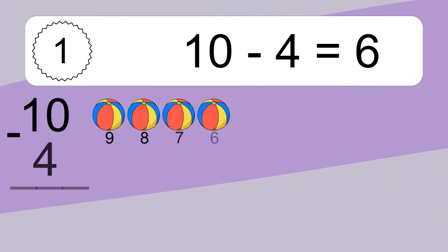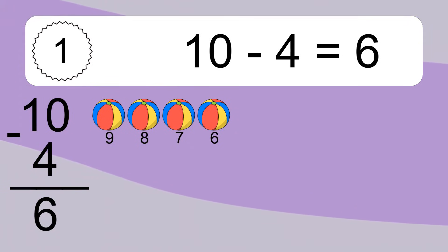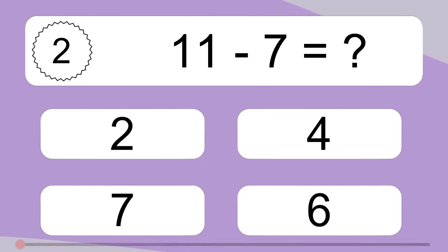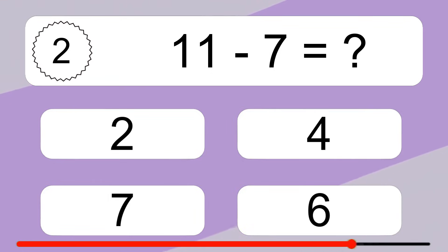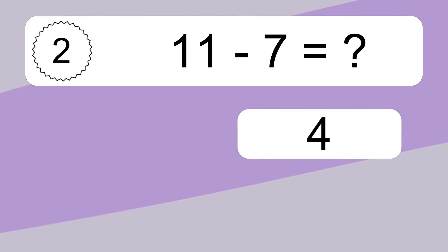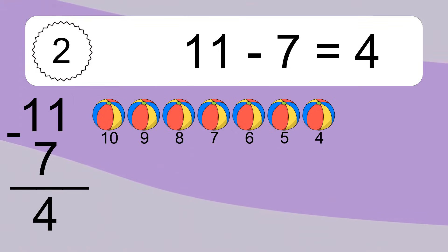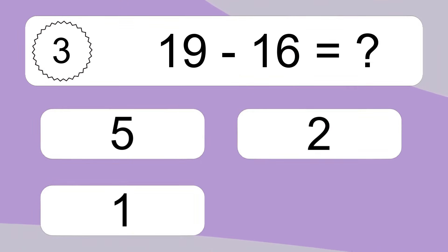10 minus 4 equals 6. Let's count it: 9, 8, 7, 6. 11 minus 7 equals what? 11 minus 7 equals 4. Let's count it: 10, 9, 8, 7, 6, 5, 4. 19 minus 16 equals what?